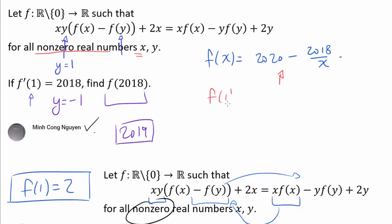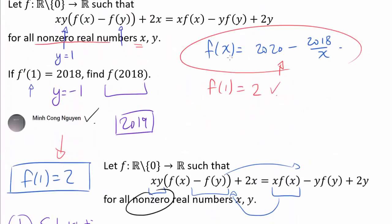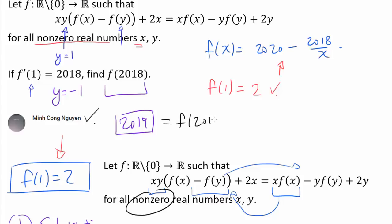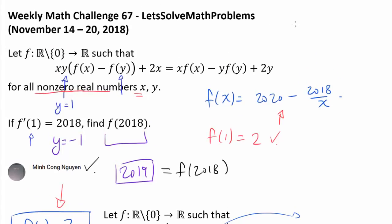Because the function we found satisfies f(1) = 2, which we proved must hold for any valid f, we know this function applies to every value of x other than 0, including 1. Finding f(2018) = 2019 completes both solutions. The answer to this question is 2019.